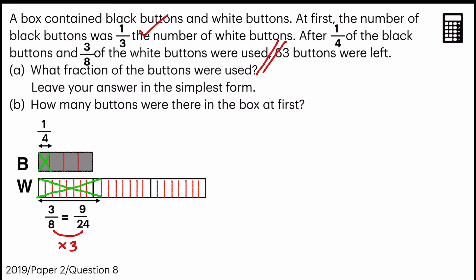So let's solve A first. What fraction of the buttons were used? Before we can come up with a fraction of a total, we need to look at this part of the model. Can you see? This is one quarter, but at the bottom, it's cut up into eight parts. But on top, it's cut up into four. So to be able to count the total number of units, we need to make sure that they are cut up into eight as well.